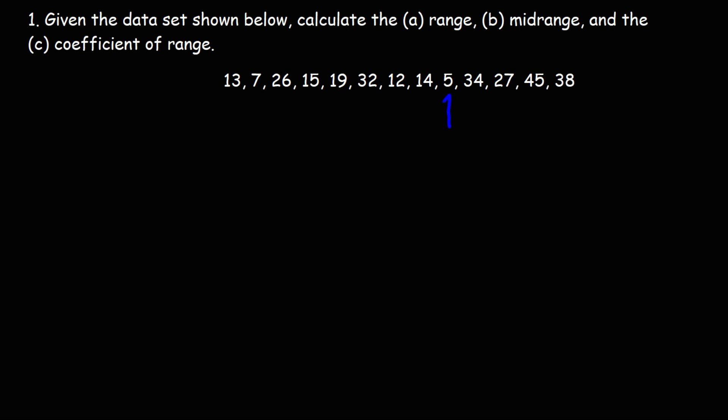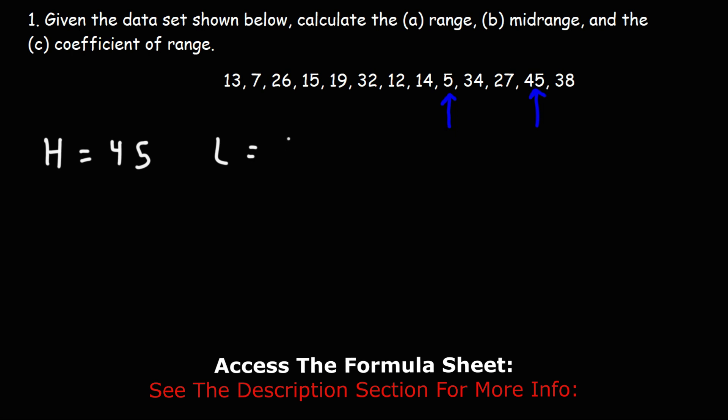The lowest number we can clearly see is going to be 5. The highest number in this list is 45. So H, the highest number, is 45. L, the lowest number, is 5.